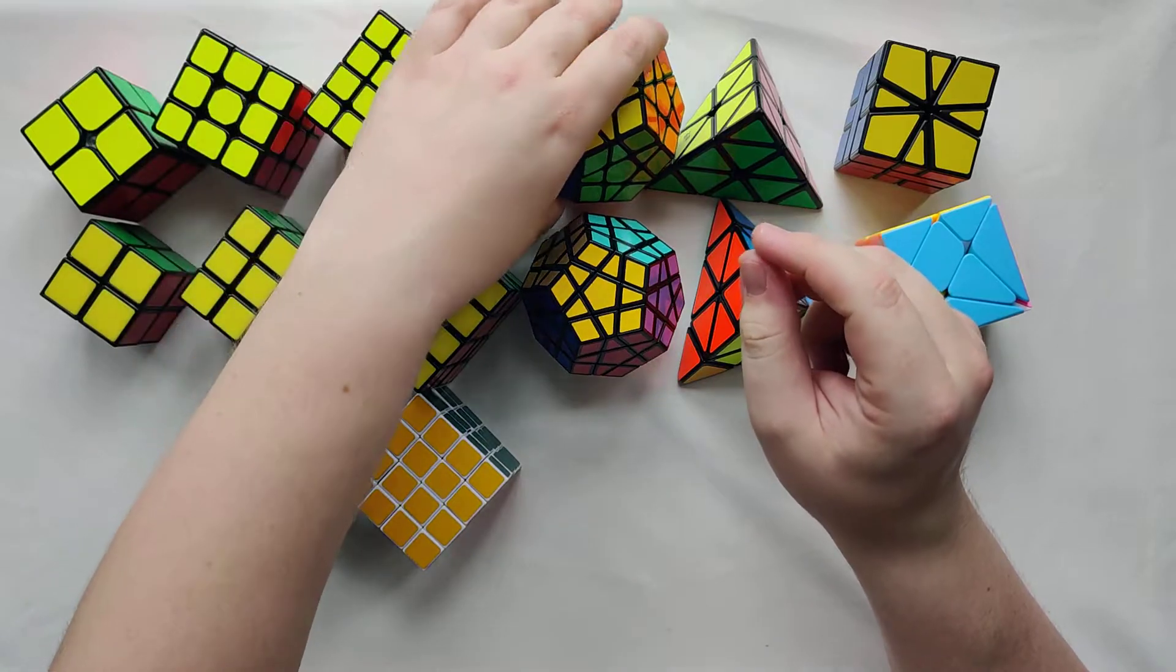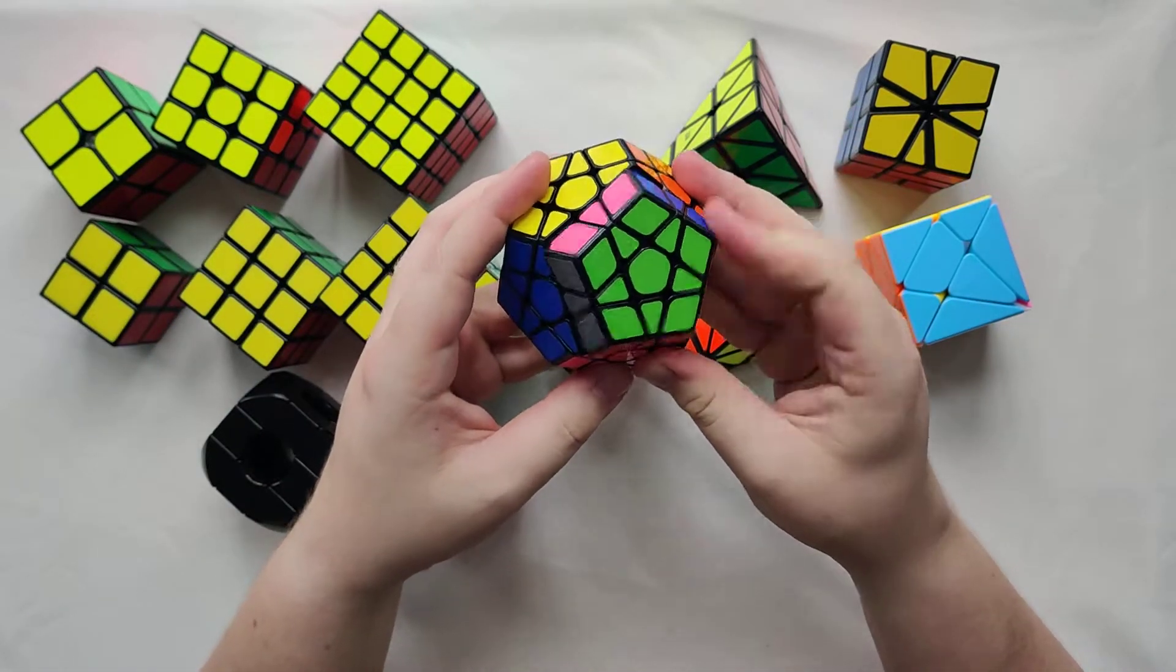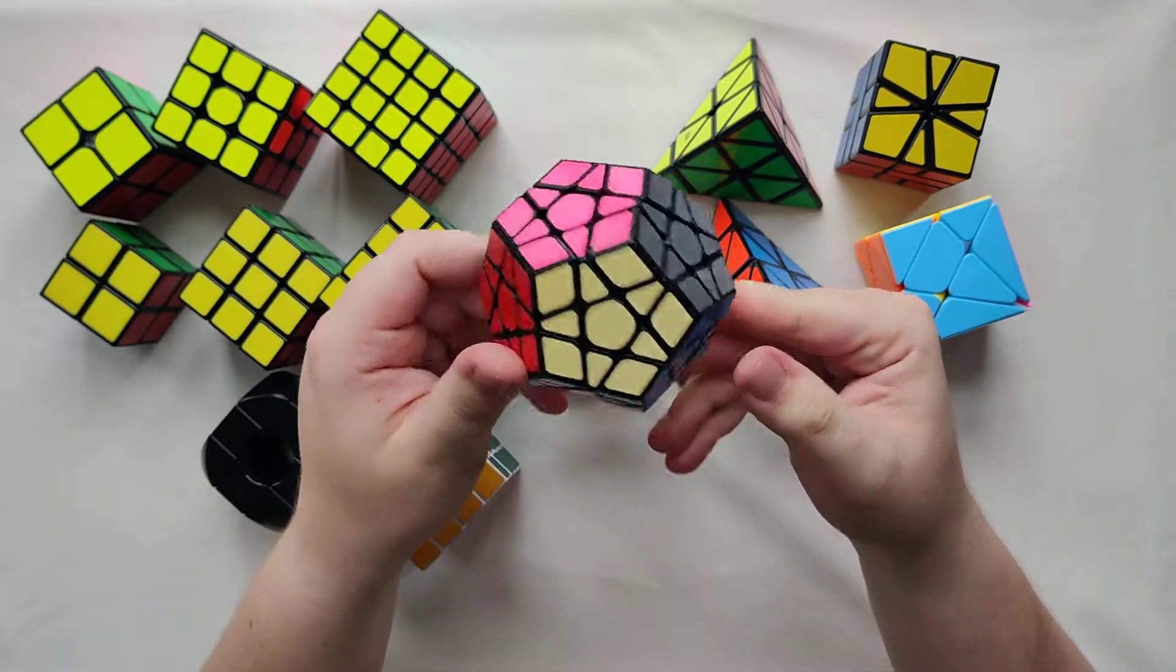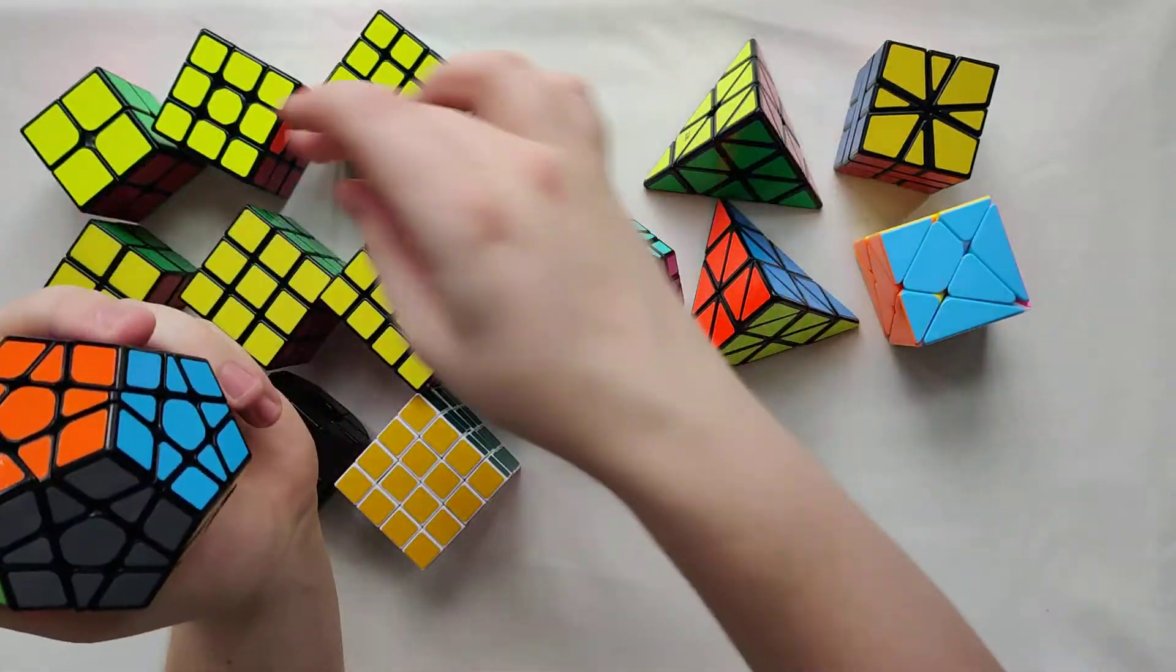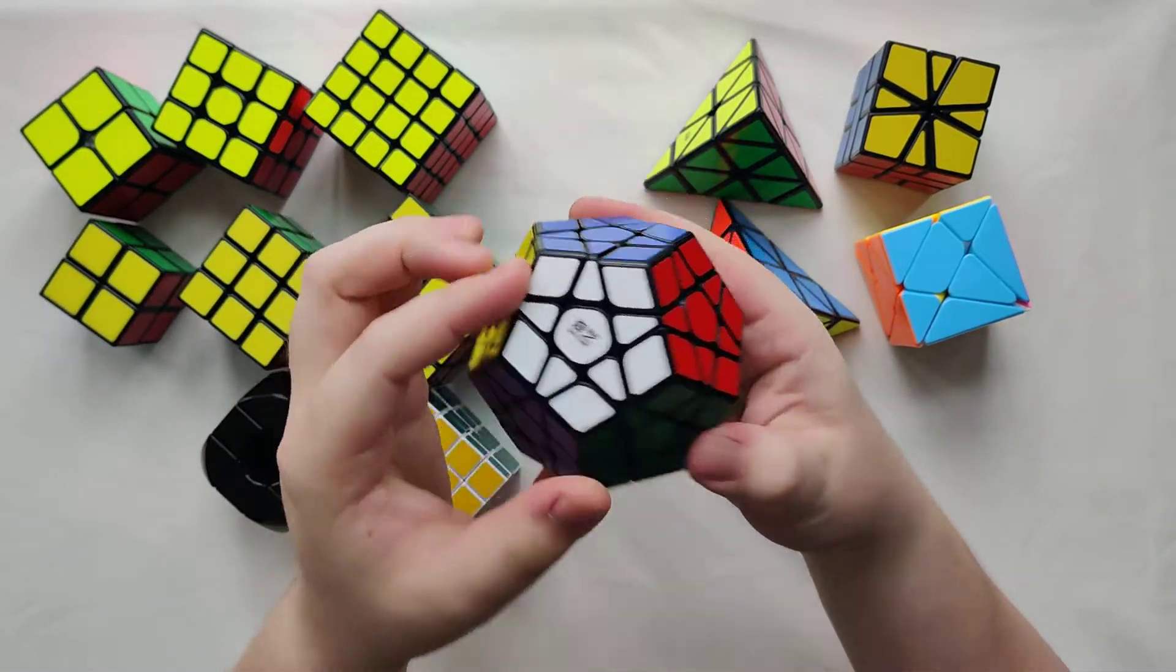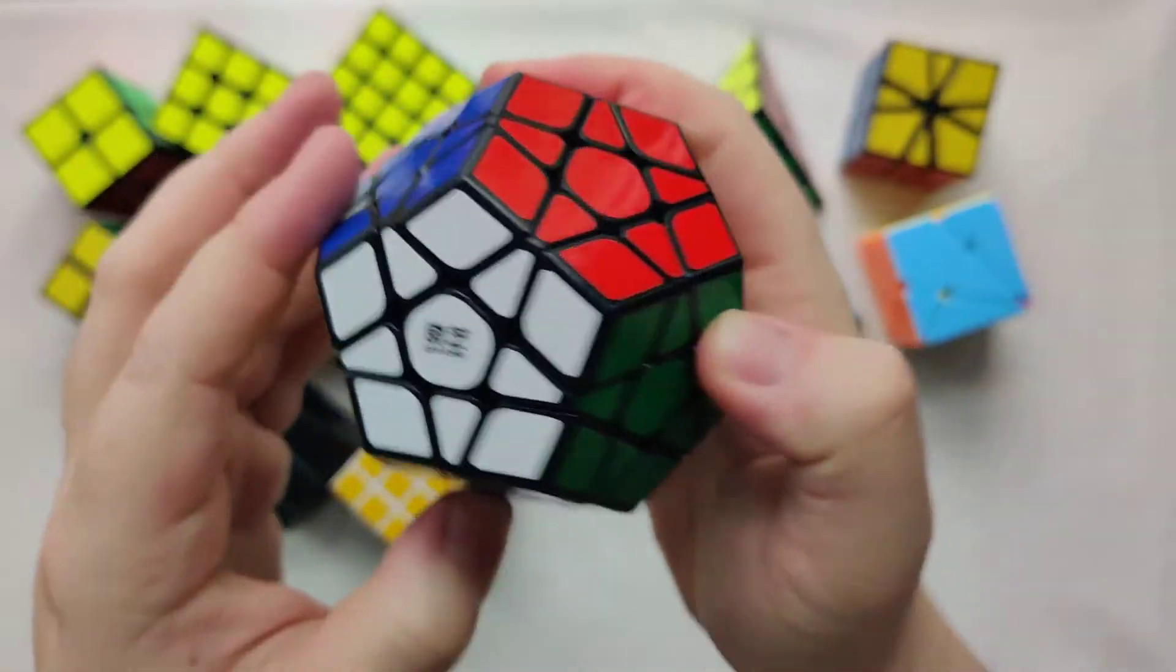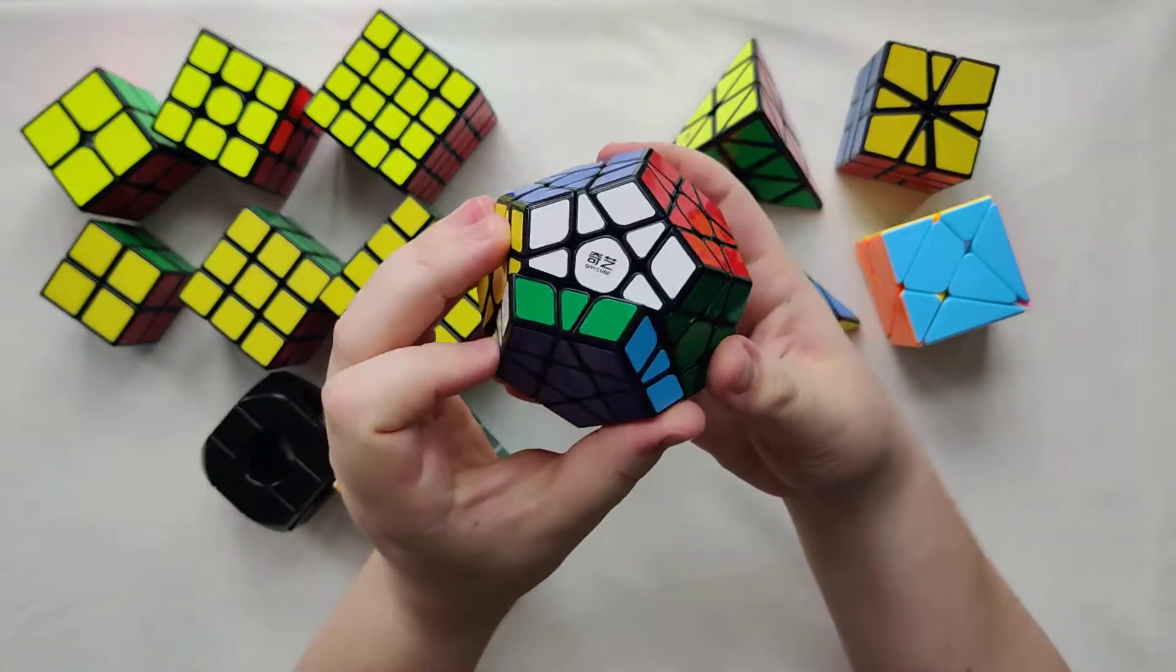Then we have one of my least favorite puzzles to actually solve because it takes so long. That's the Megaminx. This is again the Qi Yi Megaminx. Essentially everything on the top row minus square one is Qi Yi. And actually there's the logo there. Qi Yi Cube, even though it clearly isn't a cube.